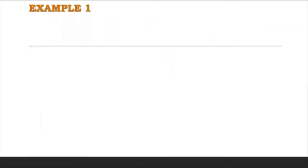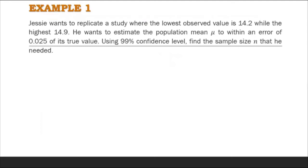Example one: Jesse wants to replicate a study where the lowest observed value is 14.2 and the highest is 14.9. He wants to estimate the population mean mu to within an error of 0.025 of its true value using a 99 percent confidence level. Find the sample size n that he needs.